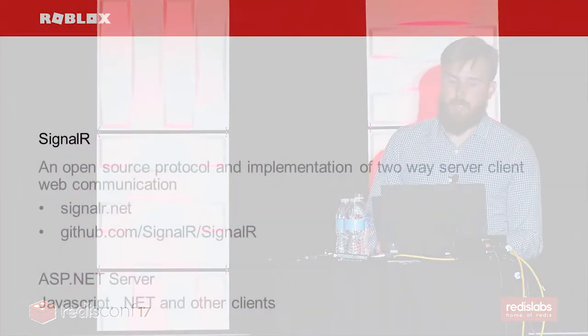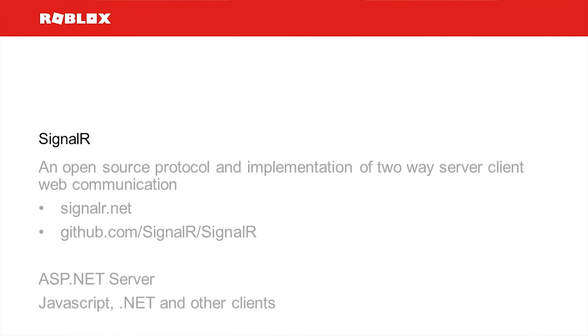We ended up settling on a library called SignalR — an open source library that Microsoft put together implementing a protocol for two-way server-client web communication. It provides an abstraction over the actual communication channel: if you're on a modern browser it'll use WebSockets, but if that's not available it can fall back to server-sent events or long polling. This was a nice compromise giving us most of the WebSocket benefits while maintaining broad client support. Crucially, there was ASP.NET server support, clients for JavaScript and .NET, and we found a C++ client — our game client is written in C++ — allowing the system to be available on all our platforms.